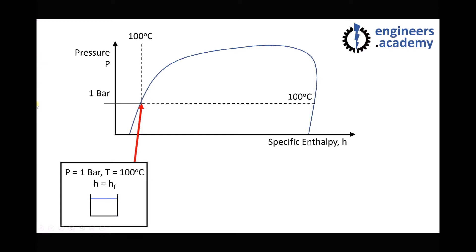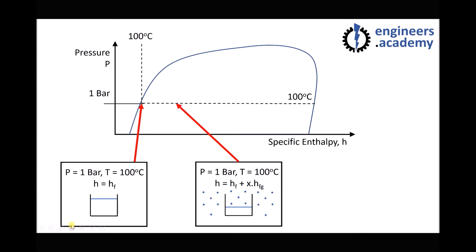If we continue adding enthalpy or heat energy to that water, it's going to begin to evaporate. Taking a second point on that curve as we move left to right, we now have a larger enthalpy and what we have is wet steam — a mixture of steam and water at 100 degrees C. A fraction of that fluid is water and a fraction is steam. We still have a pressure of 1 bar and a temperature of 100 degrees C because the fluid changes state at the same temperature.